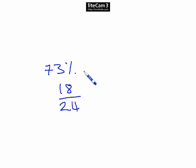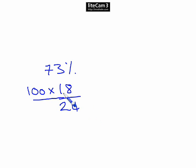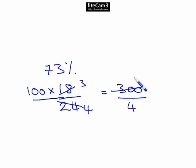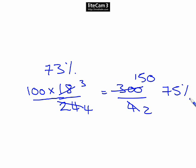We've got one percentage score: 73%. We need to convert 18 over 24 to a percentage: 18 over 24 times 100. Cancel — 6 threes are 18, 6 fours are 24 — giving 3 over 4 times 100, which is 300 over 4. That's 75. So 75% is the second score and 73% was the first. The difference is 75 minus 73, which gives us 2%. Our answer is 2%.